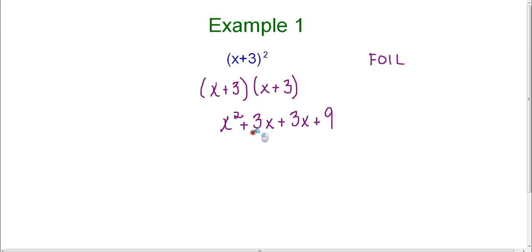And then we can simplify the middle portion here. So 3x plus 3x is 6x. So we end up with an answer of x squared plus 6x plus 9. And that is the correct answer. And using FOIL is an absolutely acceptable method for simplifying this expression.